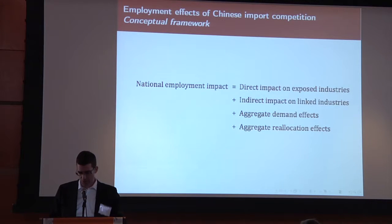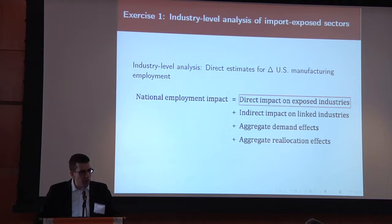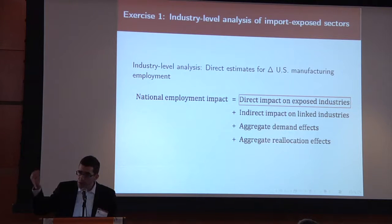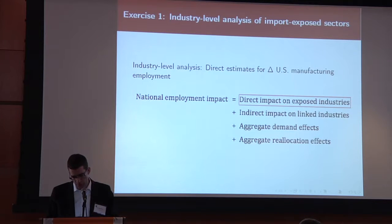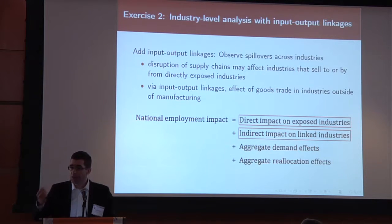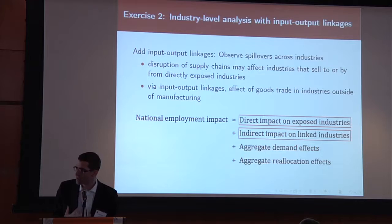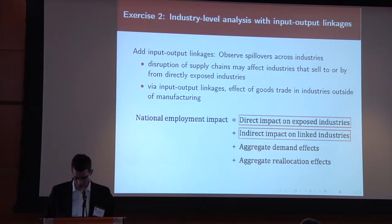The first exercise is the most traditional approach: we measure the differential exposure of industries to trade competition from China and look at the direct impact on employment in those industries. In the second part, we try to capture indirect effects that operate because industries within the United States sell goods and services to each other, so we ask what happens if someone's suppliers or customers are directly affected by this trade exposure.